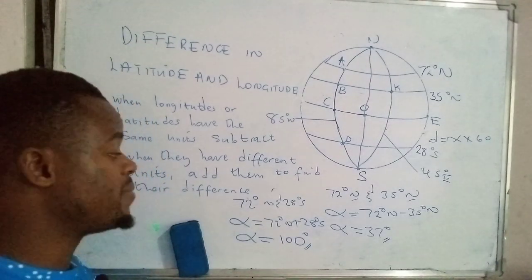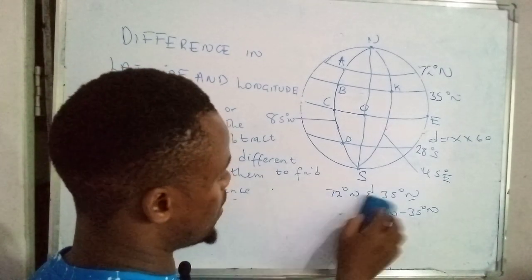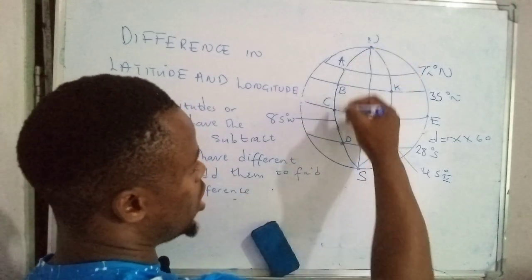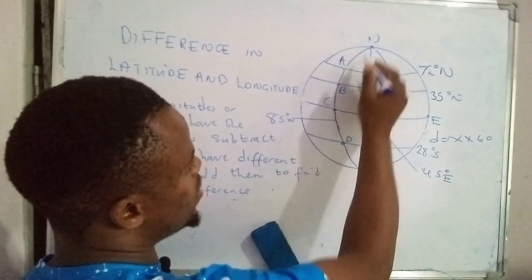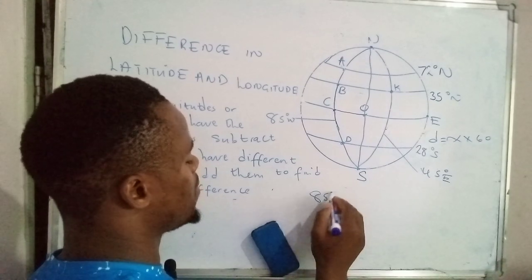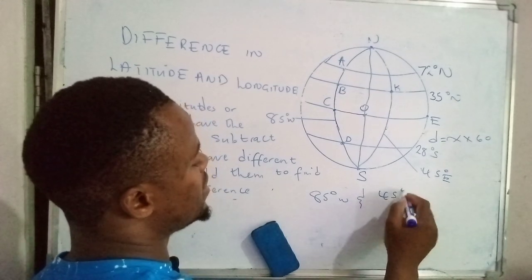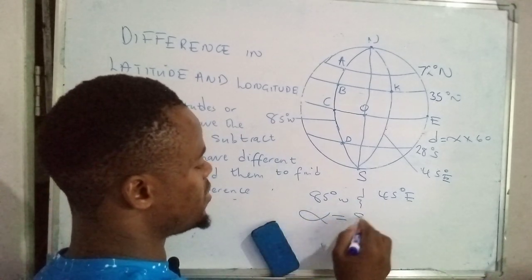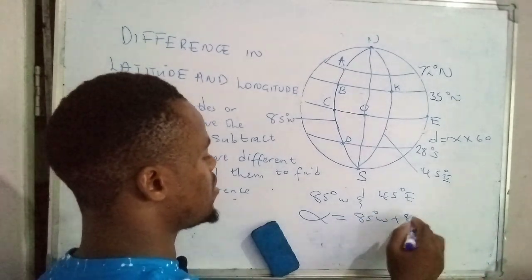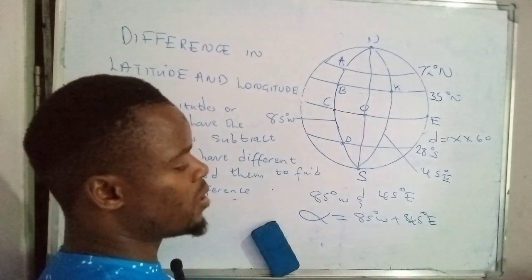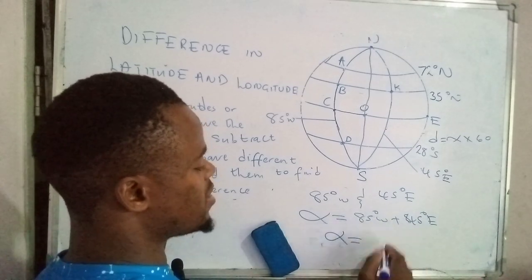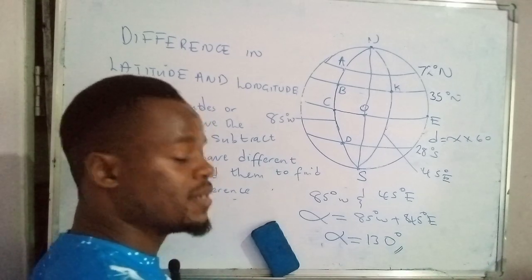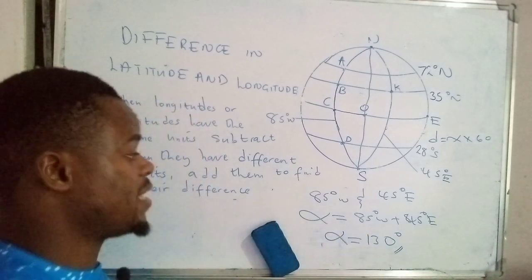The same principle applies equally to longitudes. Let's look at an example where you find the difference between 85 degrees west and 45 degrees east. To find the difference, since they are in two different regions, you add them: 85 degrees west plus 45 degrees east. The result is 130 degrees. So if they're in the same region, subtract; if they're in two different regions, add.